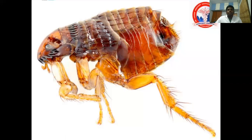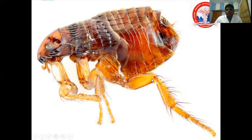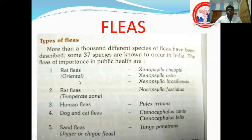Now, what is this? Lice were dorsoventrally flattened, but this appears compressed from both sides — so it is a rat flea. It also has three pairs of legs, with head, thorax, and abdomen visible. One notable feature: small hair-like bristles all over the body, like the bristles on a toothbrush.